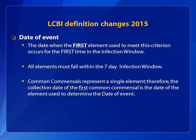Gap days are no longer used to determine fulfillment of infection criteria. Instead, the NHSN infection window is used to make this determination. The NHSN infection window is defined as the seven-day period during which all site-specific infection criteria must be met. It includes the day the first positive diagnostic test was obtained and the three calendar days before and three calendar days after. Diagnostic tests could include the laboratory specimen collection date, imaging test date, procedure or exam date, physician diagnosis, or initiation of treatment.